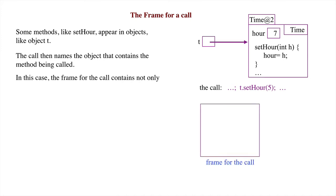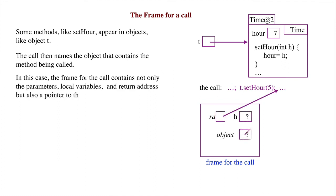In this case, the frame for the call contains not only the parameters, local variables, and return address, but also a pointer to the object in which the method resides, so that the fields and methods of the object can be used.